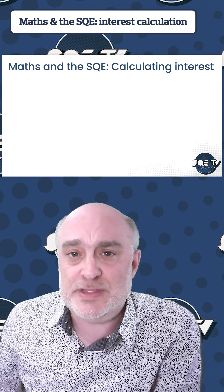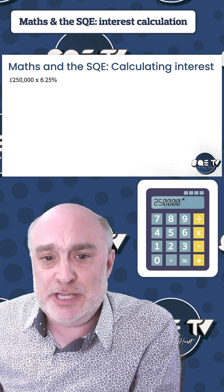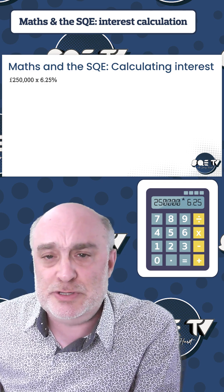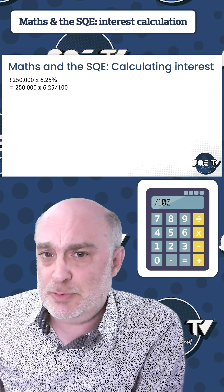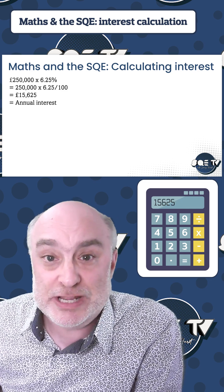We'll take the big figure first when you're doing the calculation. So punch in £250,000, multiply that by the interest rate, so multiply that by 6.25 divided by 100. That's 6.25%, and that comes to £15,625, which is the annual rate of interest.